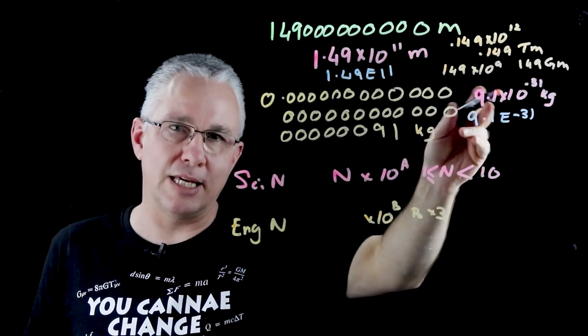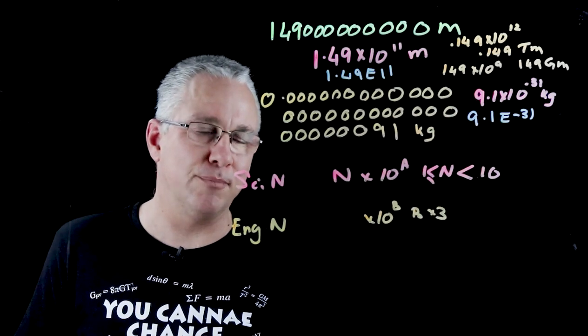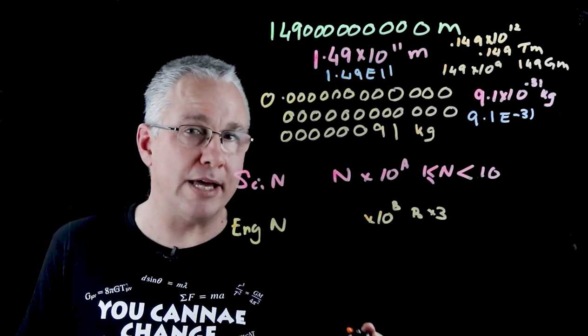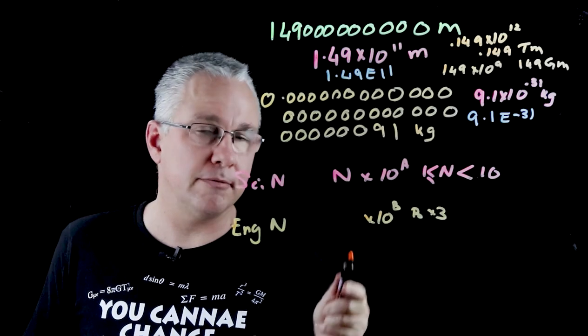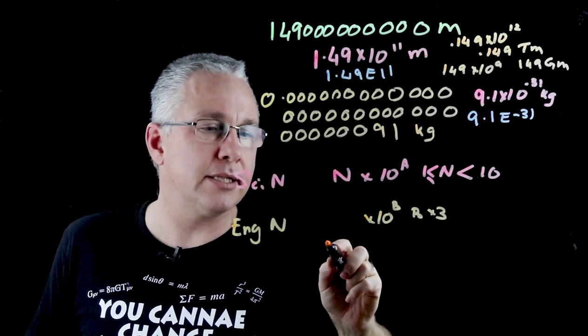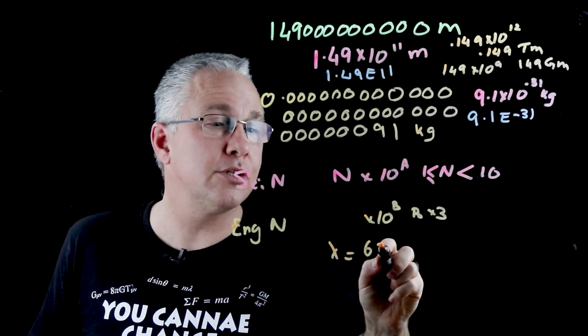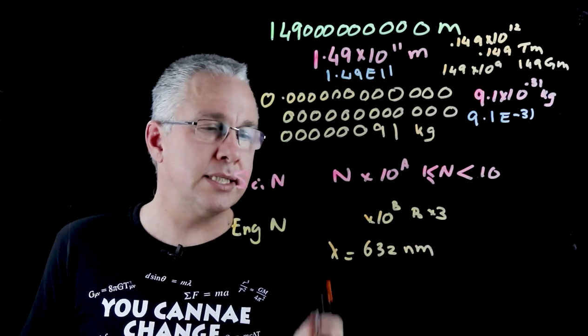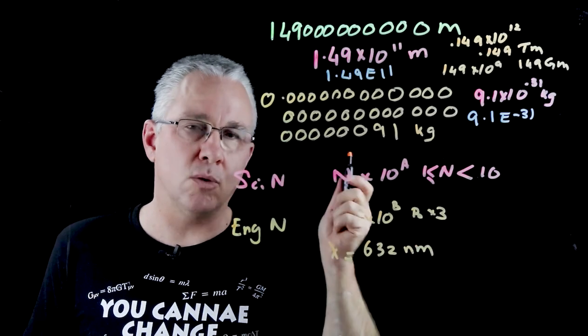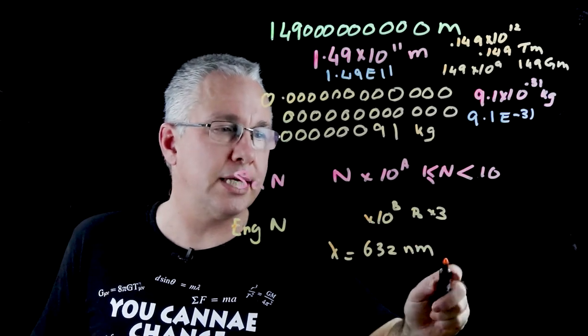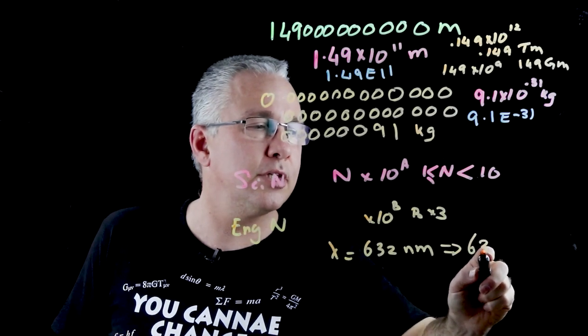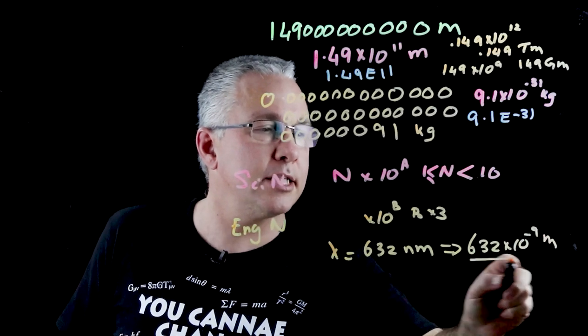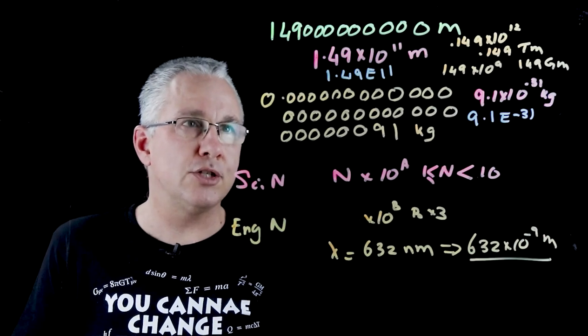Now, this number is a bit small for me to use prefixes, but let me give you an example. Let's say I have the wavelength of a particular type of light, and so the wavelength is given, let's say, 632 nanometers. Now, 632 nanometers automatically allows me to convert that into engineering notation, and it's 632 × 10^-9 meters. There is my engineering notation.